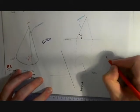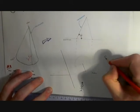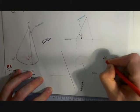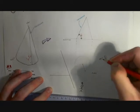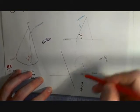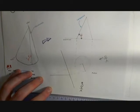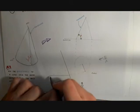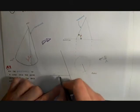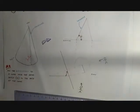So this would be looking in this direction at this generator. We see an angle formed from the base of the cone, the apex, and the generator. This angle is x.